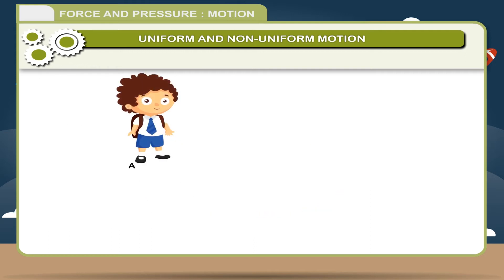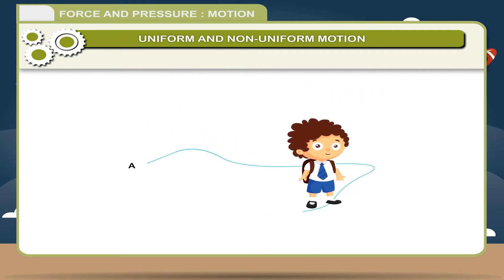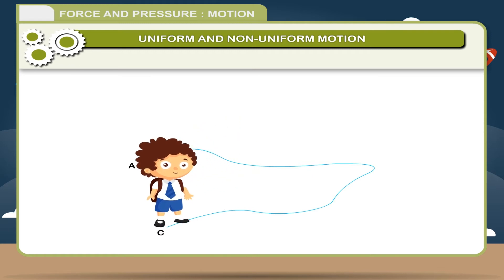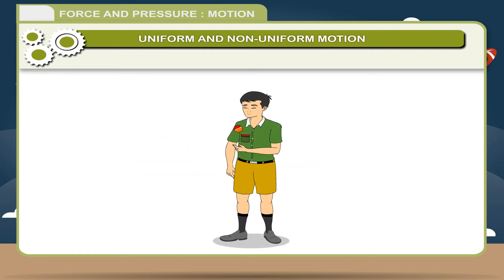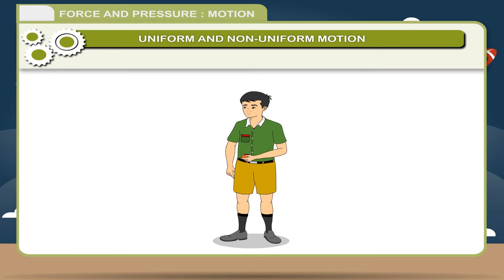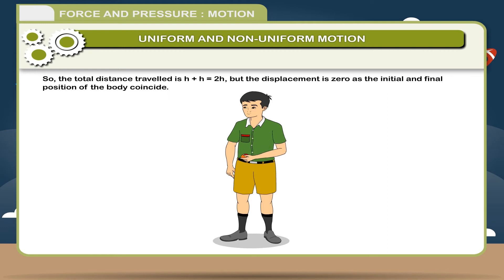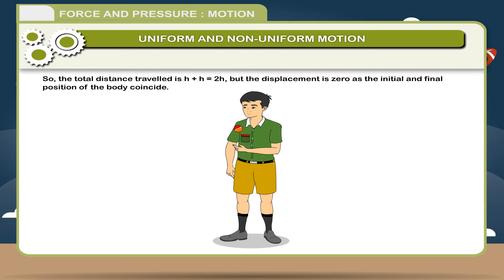It may happen that the displacement of a body is zero, though the distance travelled is not zero. Consider a body thrown vertically upwards: the body reaches a certain height H, momentarily comes to rest, and then comes back to the thrower. The total distance travelled is H plus H equals 2H. But the displacement is zero as the initial and final positions of the body coincide.